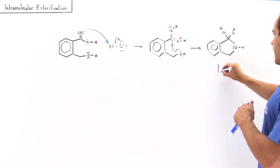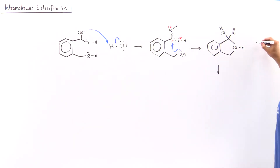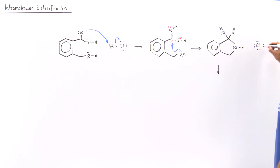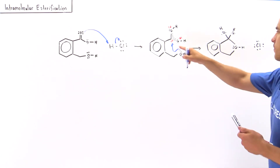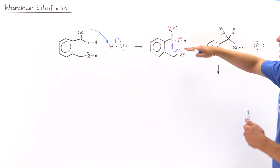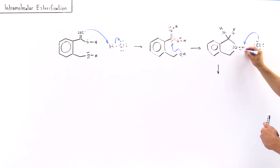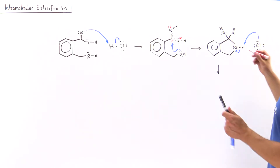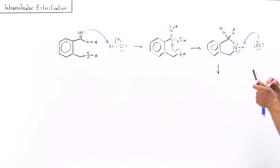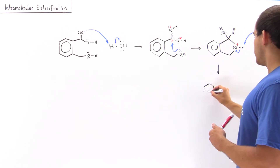In step one we formed a chloride ion. In step three, we must regenerate the acid we began with. So we deprotonate this oxygen, placing the two electrons onto it and removing the positive charge from that oxygen. This gives us the next intermediate.